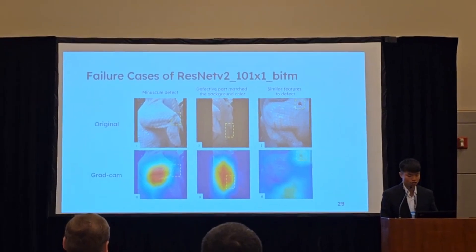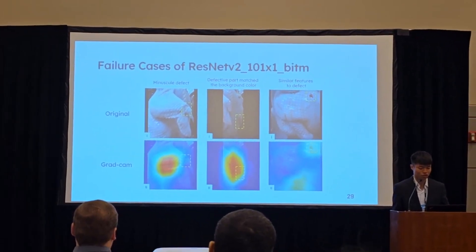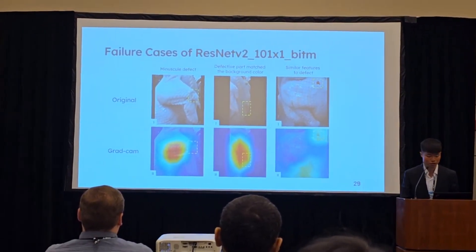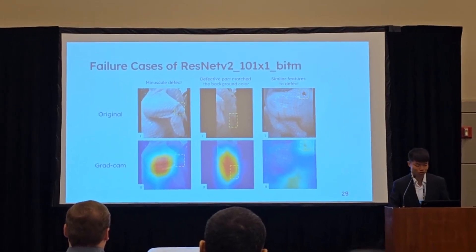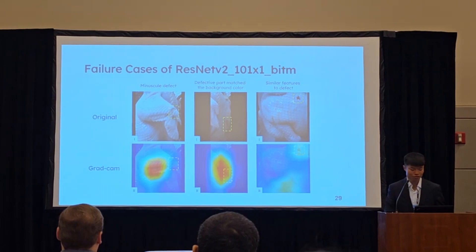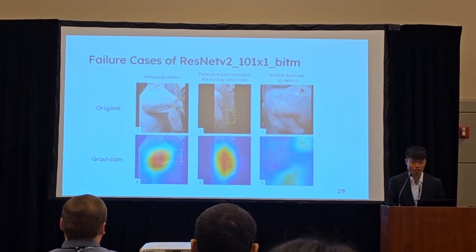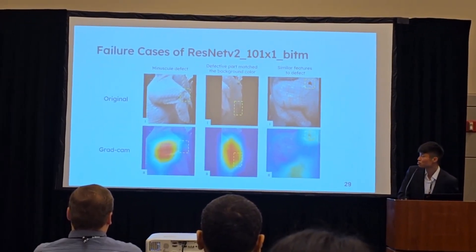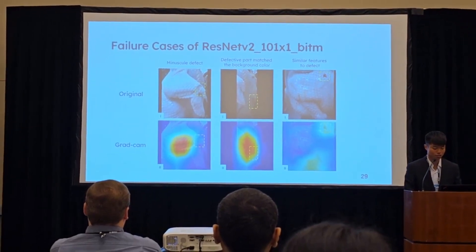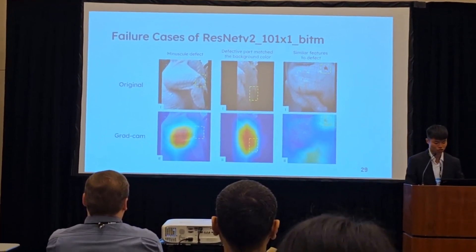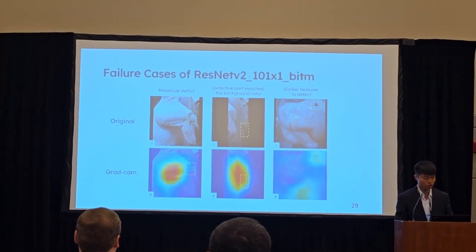This slide shows the failure cases of the ResNet model. In case 1, there is a defect on the chicken wing, but the defect was small, so the model recognized it as the normal class. In case 2, the color of the defect part was dark and closely matched the background color, so the model recognized it as the normal class. In case 3, the skin surface was contaminated with a blood clot, which is similar to the bruise problem, so the model incorrectly predicted it as the defective class. To address the misclassification problem, I think it is necessary to increase the number of training images that encompass various types of defect conditions.